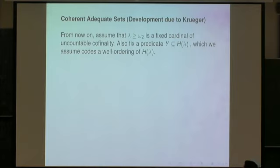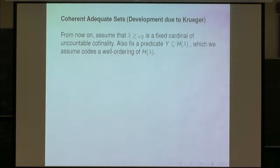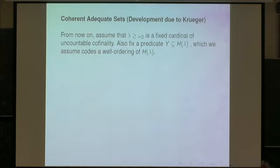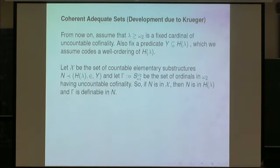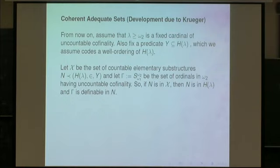Let me start explaining the notion of coherent and adequate sets. This development is due to Krueger. From now on, we assume that lambda is a cardinal which is at least omega_2 — a fixed cardinal of uncountable cofinality. We also fix a predicate which we assume codes a well-ordering of H_lambda. Let X be the set of all countable elementary substructures of H_lambda together with the membership relation and this additional predicate.